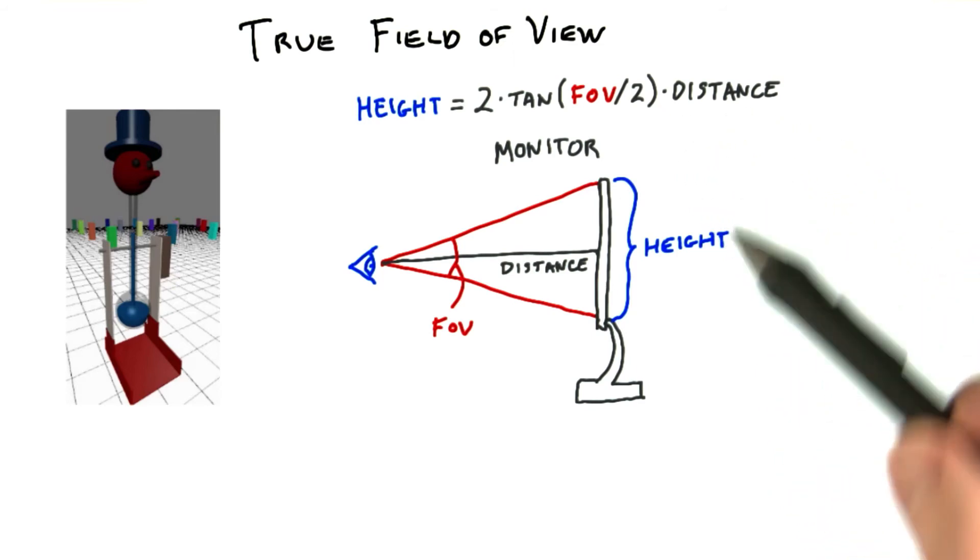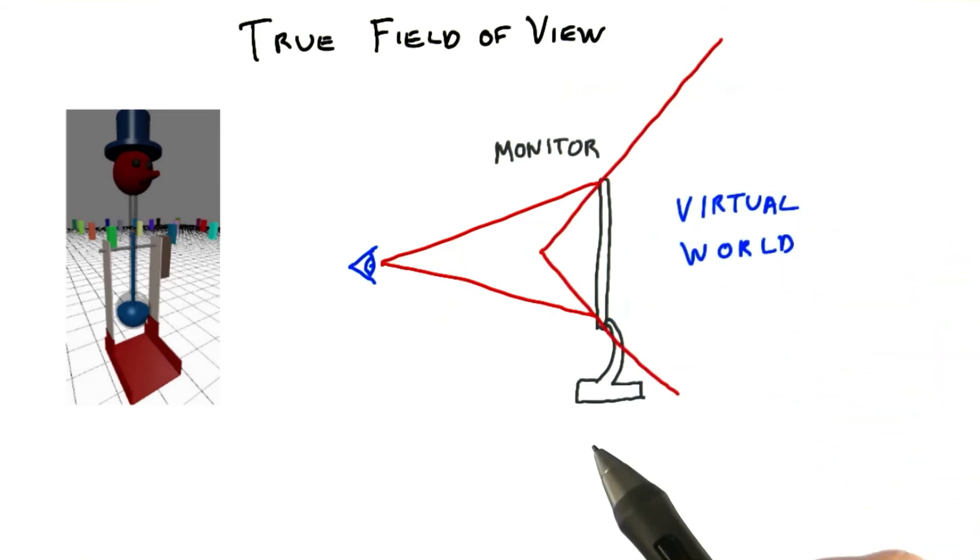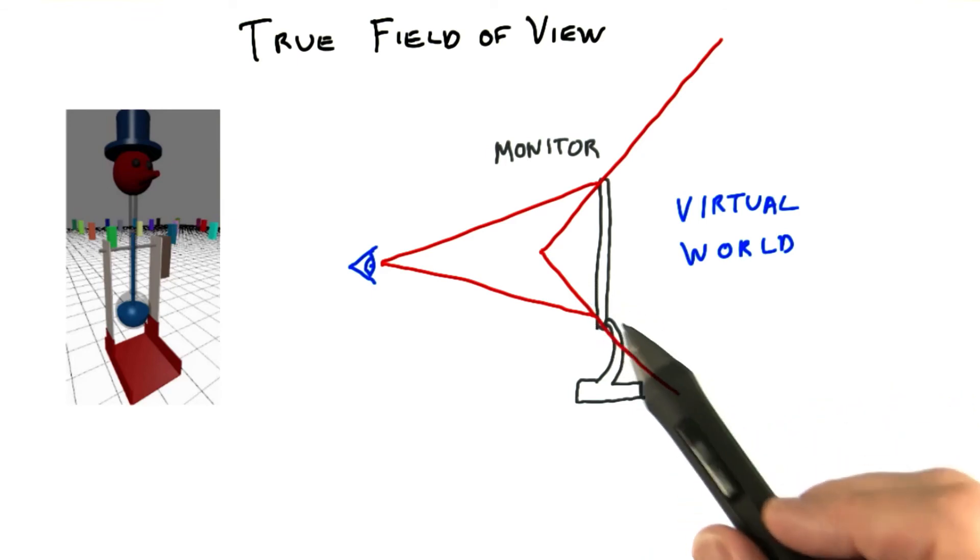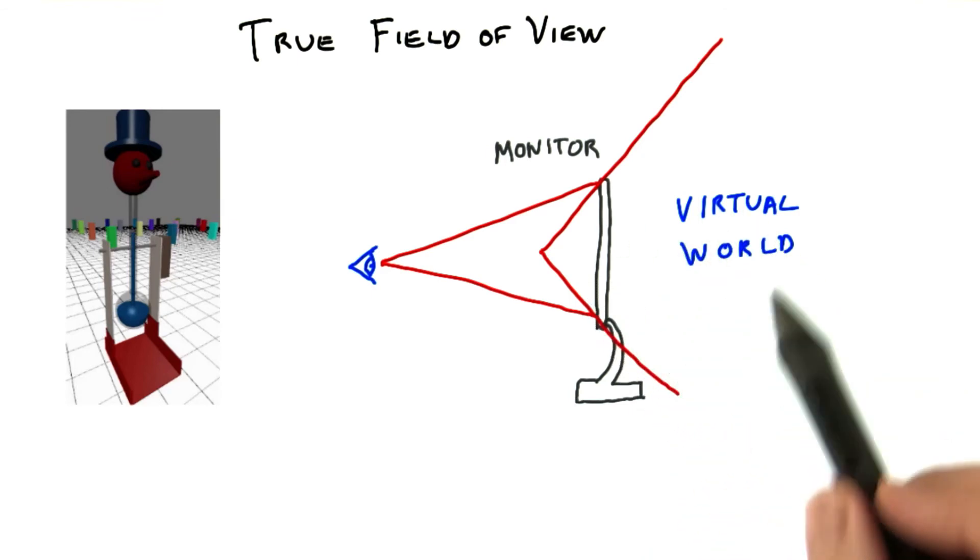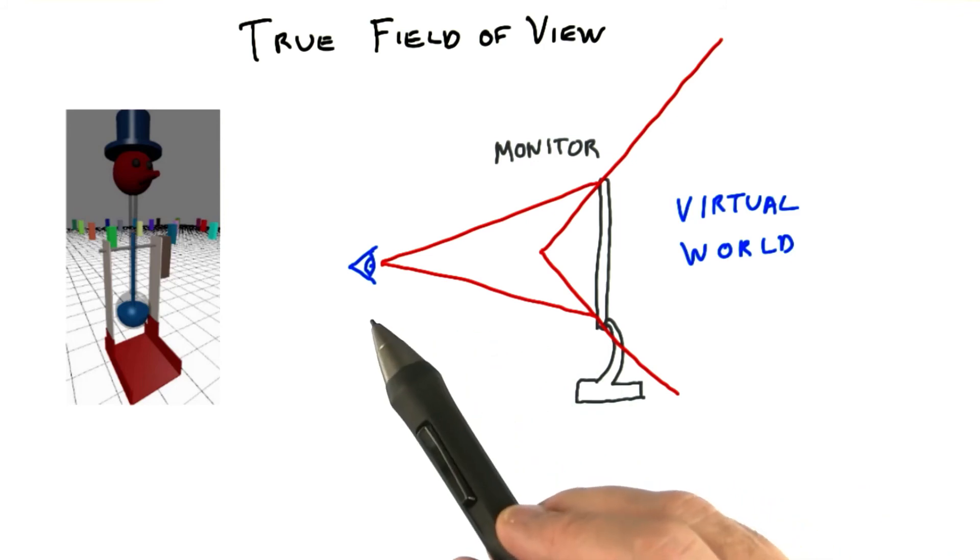As the field of view increases, the tangent value increases, and so the height of the monitor increases. What tends to happen in video games is that the designer cranks up the virtual world's field of view so that the players can see more of what's happening around them. This can certainly lead to a more playable game, but this is also where the distortion comes from, from the fact that the virtual field of view doesn't match the real world field of view.